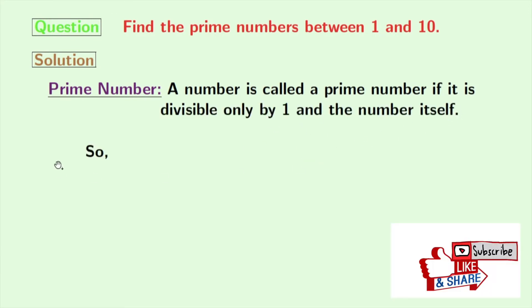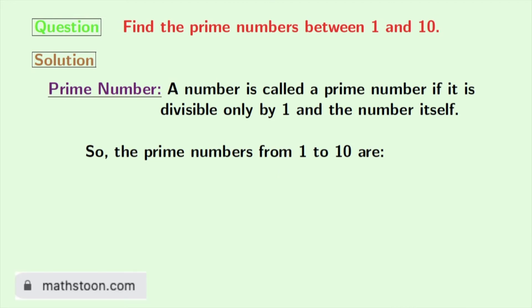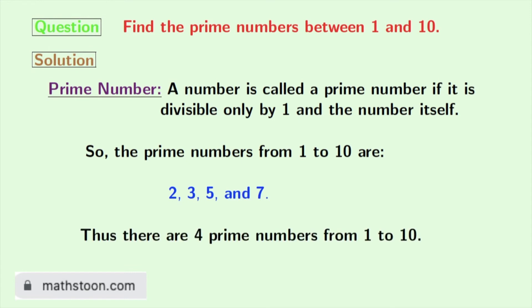So, according to this definition, here are the prime numbers from 1 to 10: 2, 3, 5, and 7. So, there are 4 prime numbers from 1 to 10.